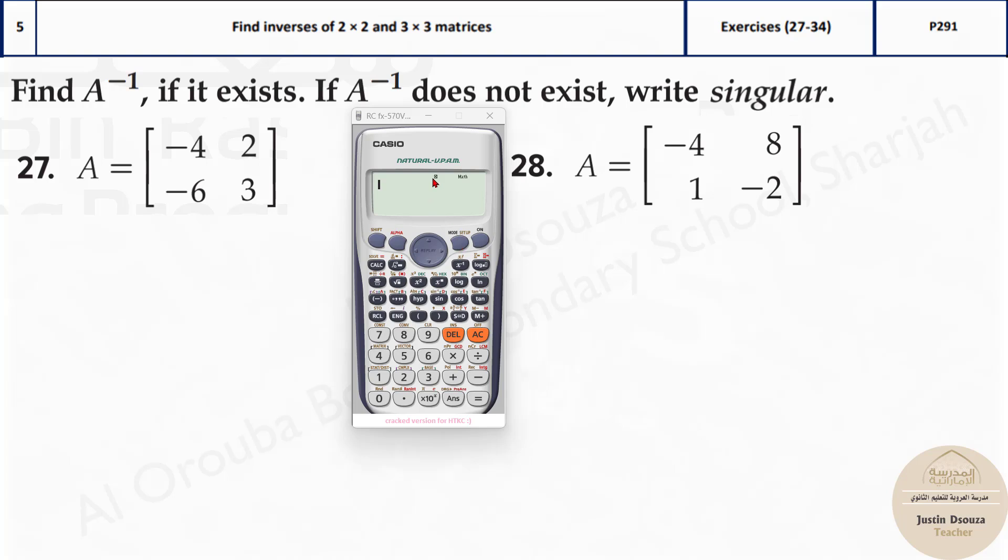First we need to press mode because there's nothing switched on. There's no matrix mode or anything. So press mode and press 6. That is the matrix. And now initially when you start you can fill in one matrix. Now for inverse there's only one matrix so this is it.